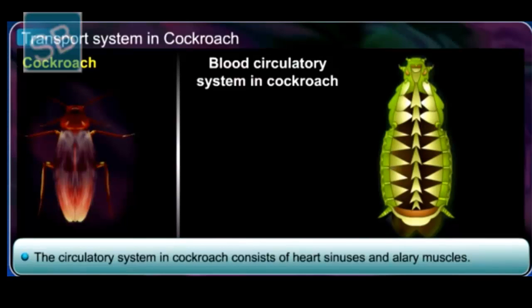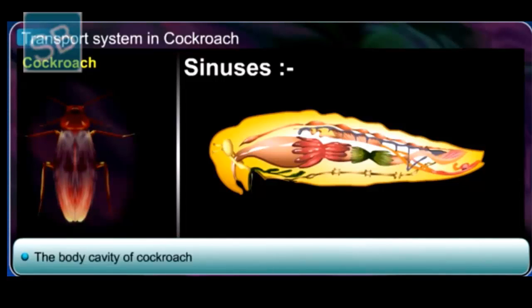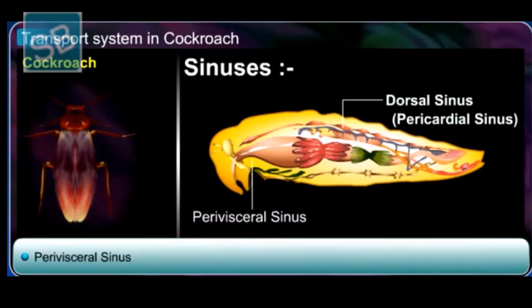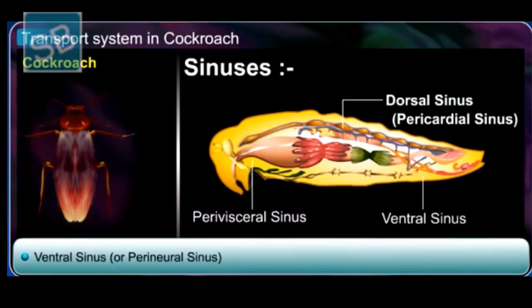The circulatory system in cockroach consists of the heart, sinuses, and alary muscles. The sinuses are the body cavity of the cockroach divided into three: the dorsal or pericardial sinus, the perivisceral sinus, and the ventral or perineural sinus.